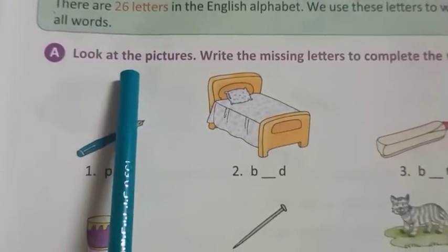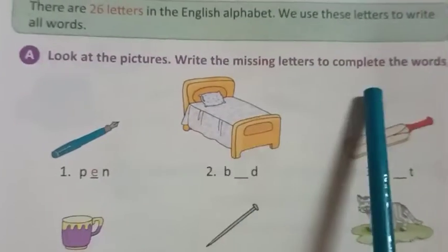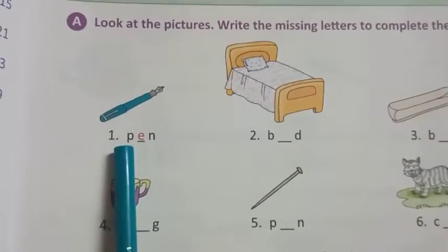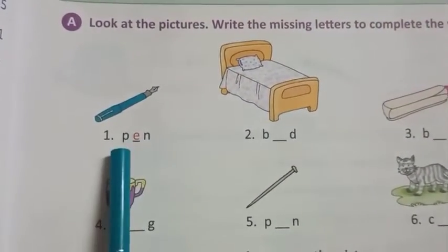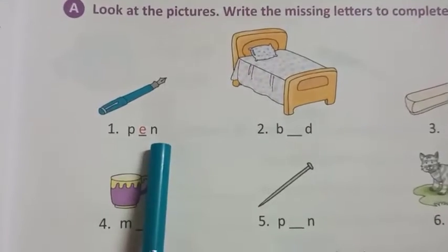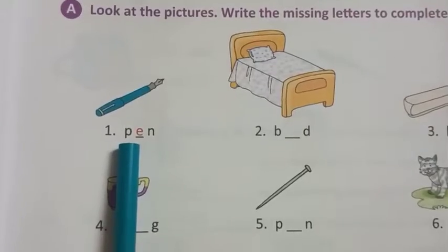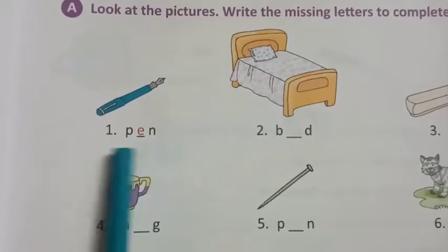Exercise A: Look at the pictures. Write the missing letters to complete the words. Here, look at number 1. Pen. P, E, N - pen. P is one letter, E is one letter, N is one letter. When they come together, P, E, N, pen.